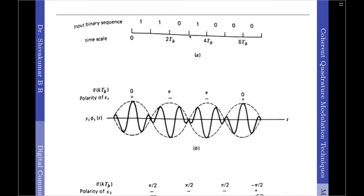Moving on, from 2·tb to 3·tb we have symbol 0, so the phase decreases by π/2. Then we have symbol 1, giving π/2 + π/2 = π. In this sequence, the time intervals considered are even multiples of tb: 0·tb, 2·tb, 4·tb, and 6·tb. At the stage where the phase is π and we have symbol 0, it decreases by π/2 to give π/2 at 5·tb. With another 0, it becomes π/2 − π/2 = 0. This is how the phase of the transmitted signal is generated by considering the even multiples of the bit duration tb.